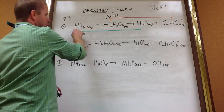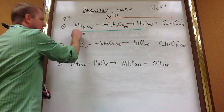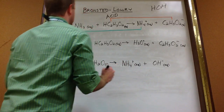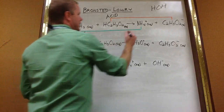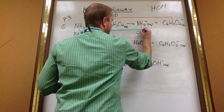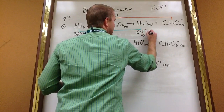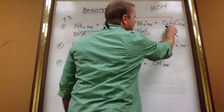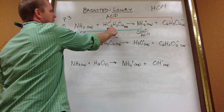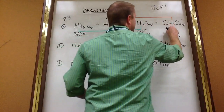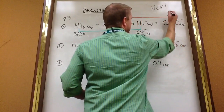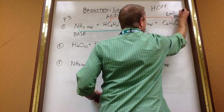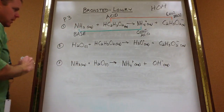For NH3, ammonia, to become ammonium, what did it have to do? It had to accept one, thus making it a base. The opposite is also true: for NH4 to become NH3, it had to give that hydrogen away — therefore it's the conjugate acid. We always have one of them named conjugate. In order for C2H3O2 to become HC2H3O2, this thing had to accept a hydrogen, thus making it the conjugate base. Ask yourself: what did it do?